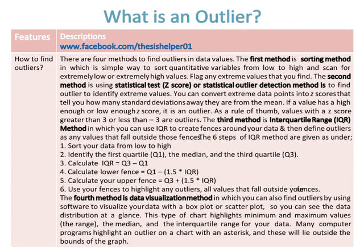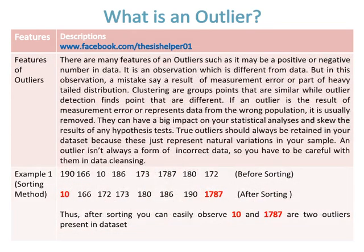There are many features of outliers: an outlier may be a positive or negative number. It is an observation which is different from the rest of the data, and may be the result of a measurement error or part of a heavy-tailed distribution. Clustering groups similar points together, while outlier detection finds points that are different. If an outlier is the result of measurement error or represents data from the wrong population, it is usually removed. True outliers should always be retained in your data set, as they represent natural variations in your sample. An outlier isn't always a form of incorrect data, so you have to be careful with them during data cleansing.